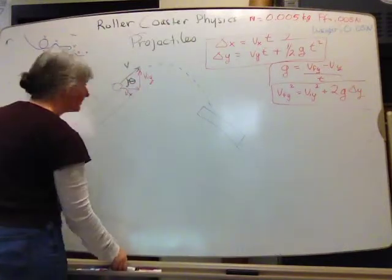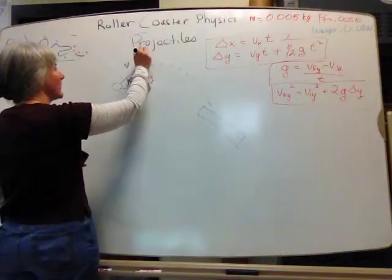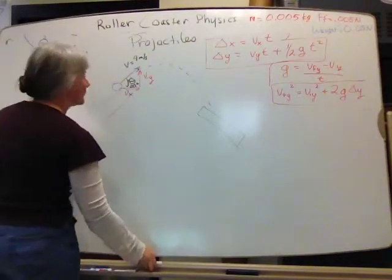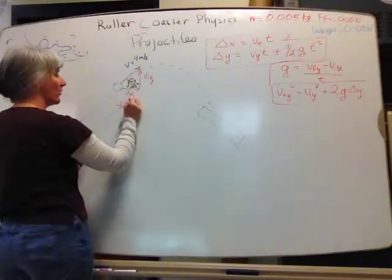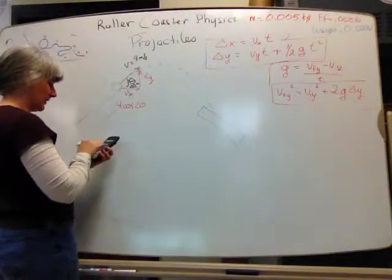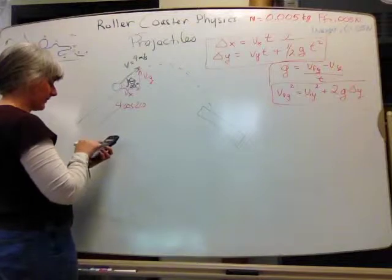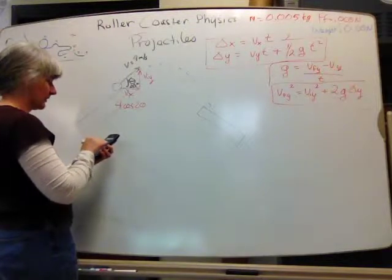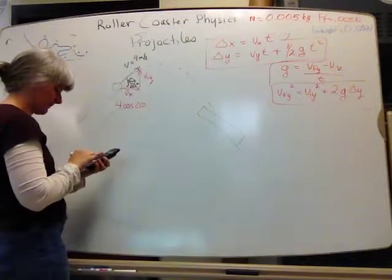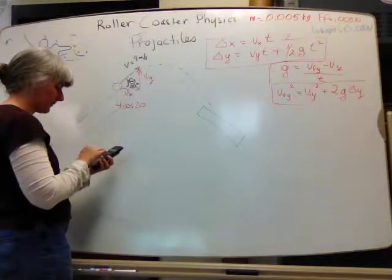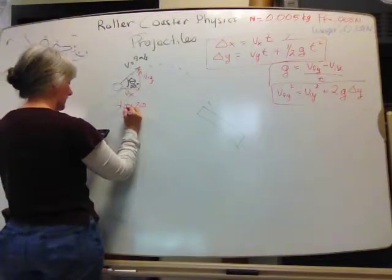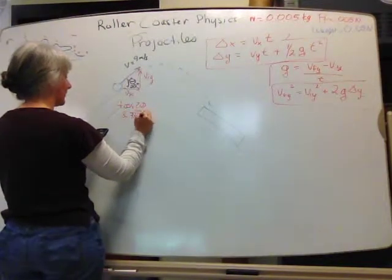Let's say my velocity here was 4 meters per second, and my angle was 20 degrees. So to get vx, that's going to be 4 cosine 20, which on my calculator is 20 cosine times 4. That's not right. 4 times the cosine of 20. 3.76 meters per second.